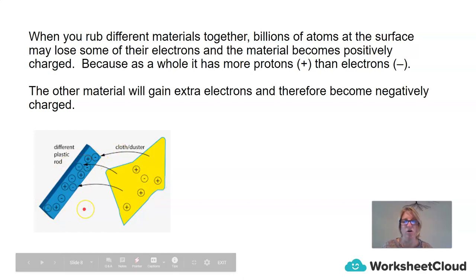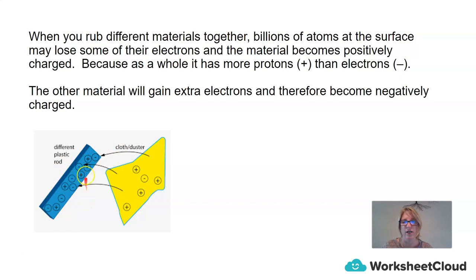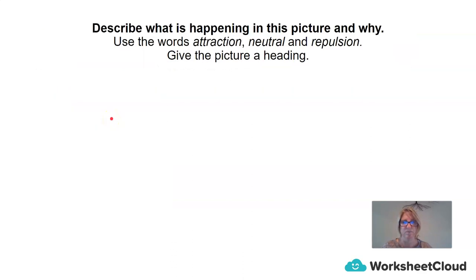The ruler has an overall negative charge — it has four positive charges but seven negative charges. I would like you to try and describe what is happening in this picture, and tell me why. Use the words 'attraction,' 'neutral,' and 'repulsion,' and give the picture a heading.